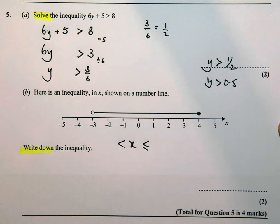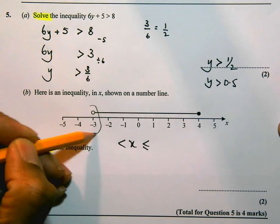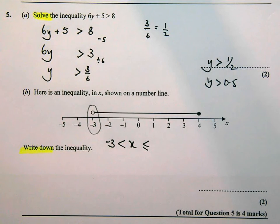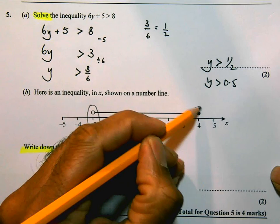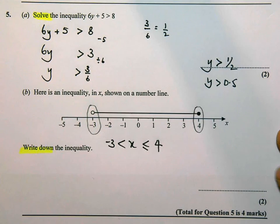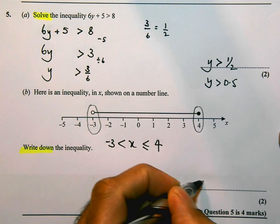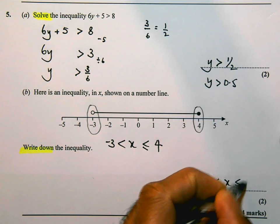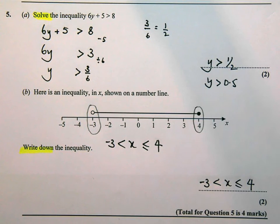So I'm going to put minus 3 over here. And on this end, I'm going to have 4. So I'm going to put 4 there. I'm just going to write that into my answer space. Minus 3 is less than X is less than or equal to 4. And that's pretty straightforward.